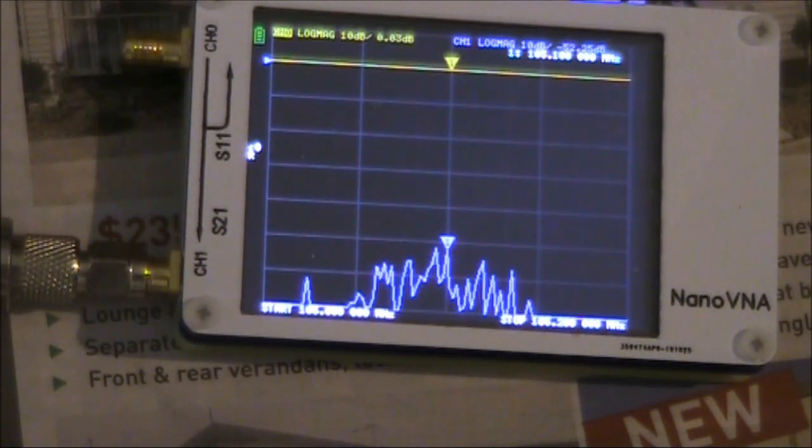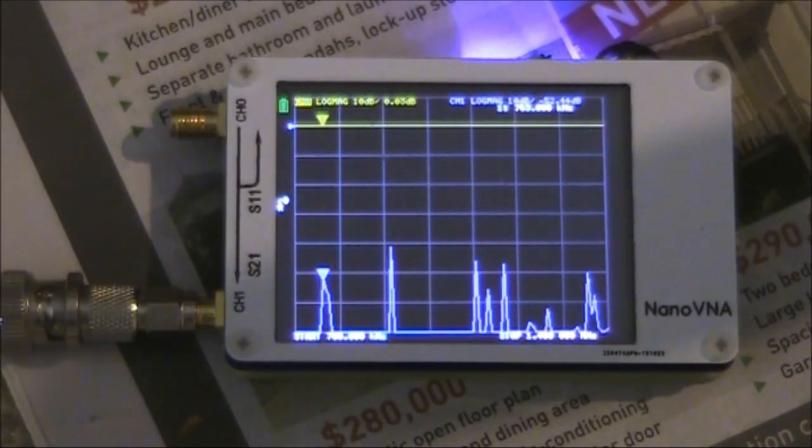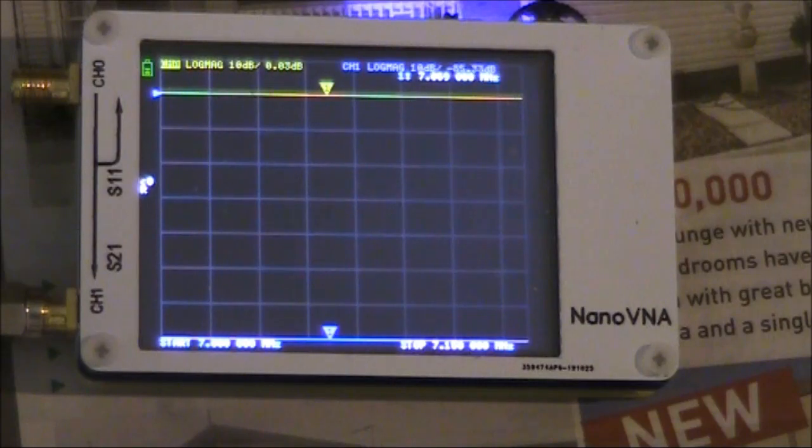It's the middle of the day, but we'll try another amateur band. This time 7 MHz. This is 7 to 7.150. And it is in the middle of the day, and I'm not getting anything to appear on the screen.